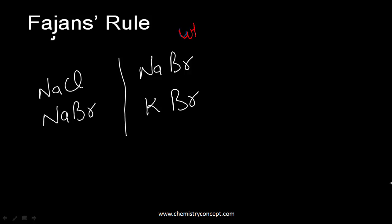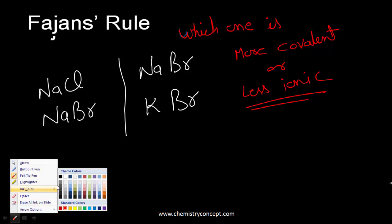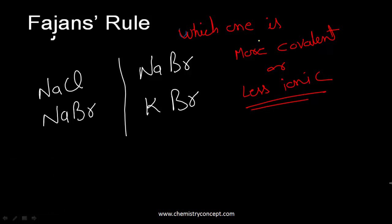According to Fajan's rule, for a compound to be covalent, there must be a large anion and a small cation.